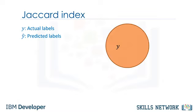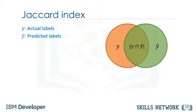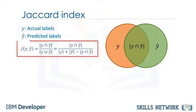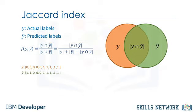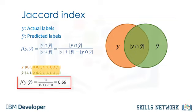Let's say y shows the true labels of the churn data set, and y-hat shows the predicted values by our classifier. Then we can define Jaccard as the size of the intersection divided by the size of the union of two label sets. For example, for a test set of size 10 with eight correct predictions or eight intersections, the accuracy by the Jaccard index would be 0.66.